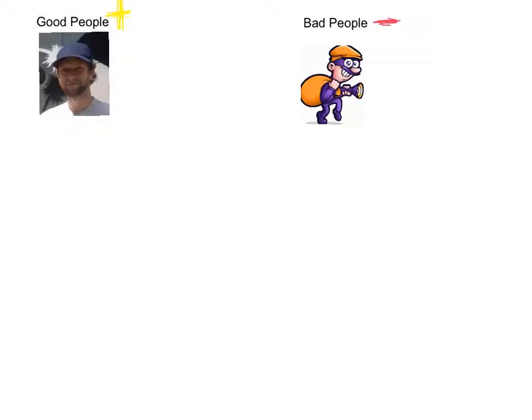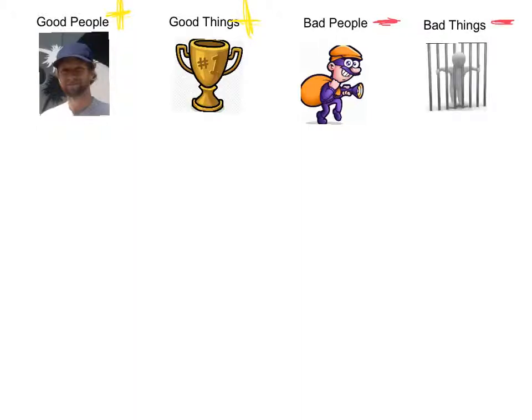I'm going to tell a story that I heard a while ago and I've repeated a number of times because it seems to help students remember the multiplication and division rules. For this story we need a good person and a bad person. I'm using Mr. Ragg as my good person because you guys all seem to really love him, and I'm using a criminal as my bad person. For this story to work we also need something we would consider a good thing, which I'm using winning an award, and a bad thing which I'm using going to jail.